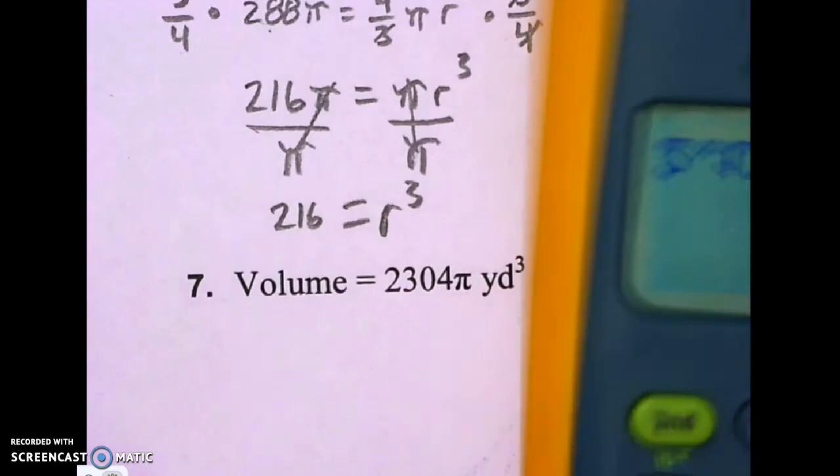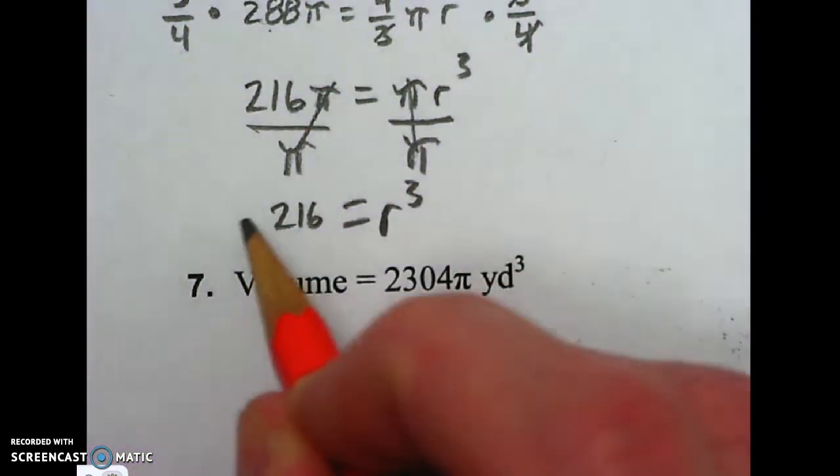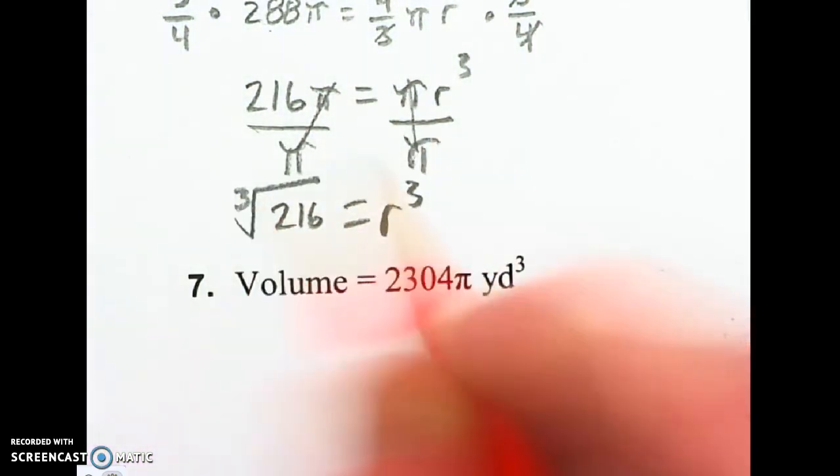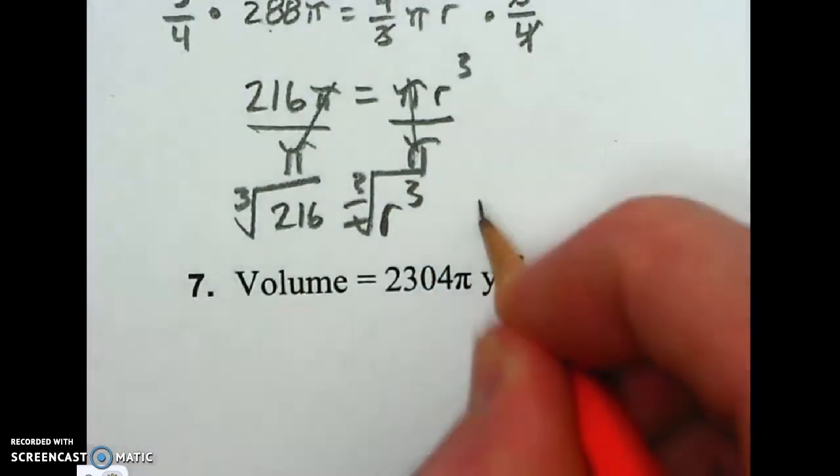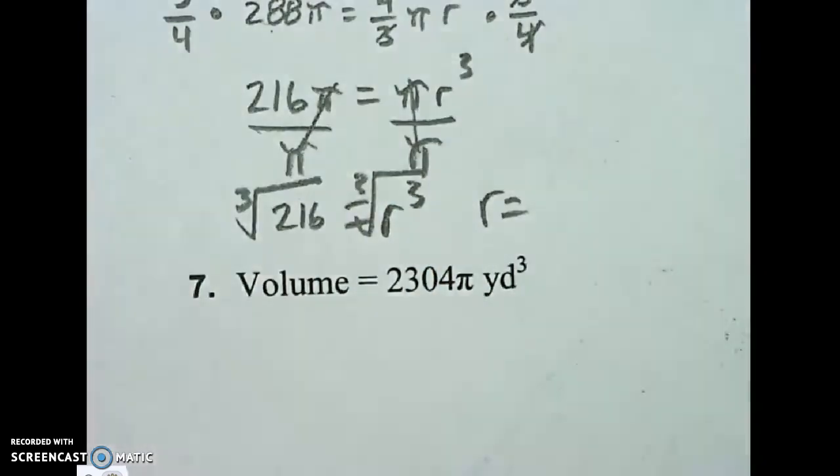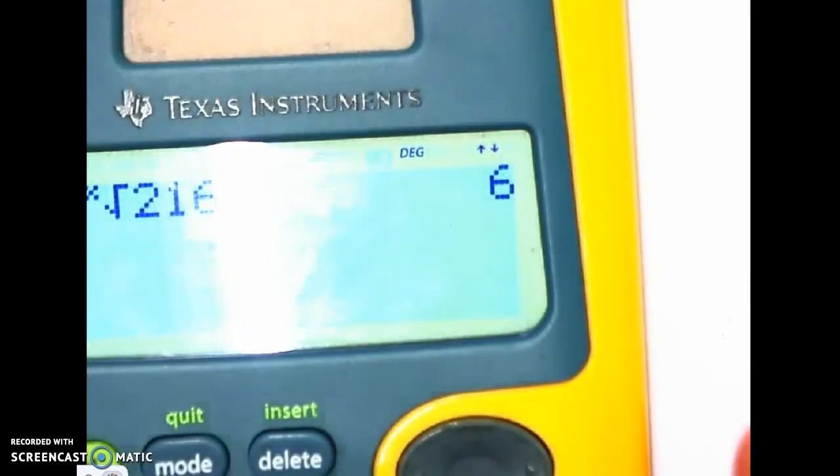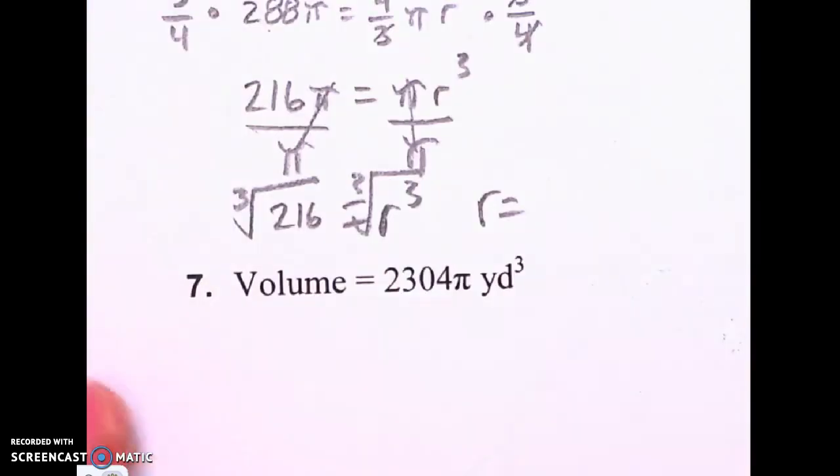216. Actually, I could probably write the cube root on the top of both of those. And now I've got R equals. Turns out it's 6. So the radius of that is 6.